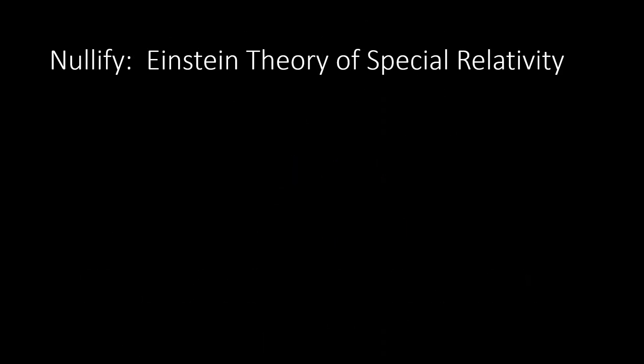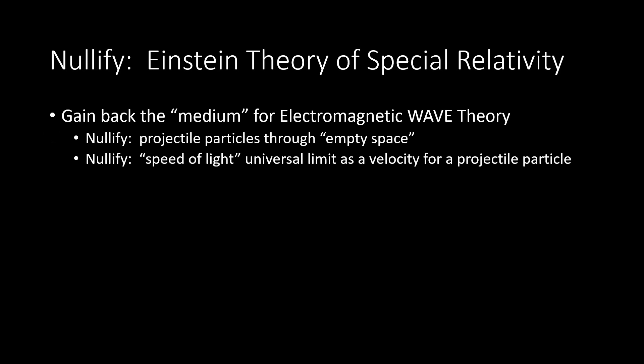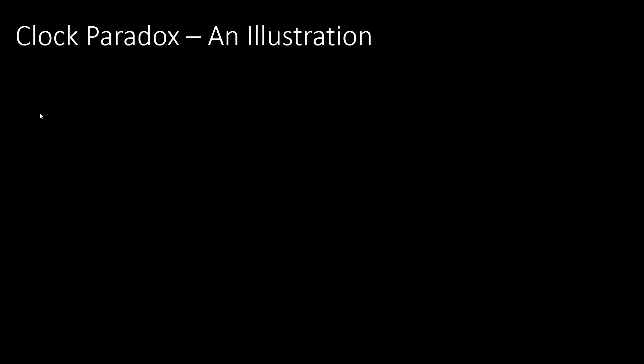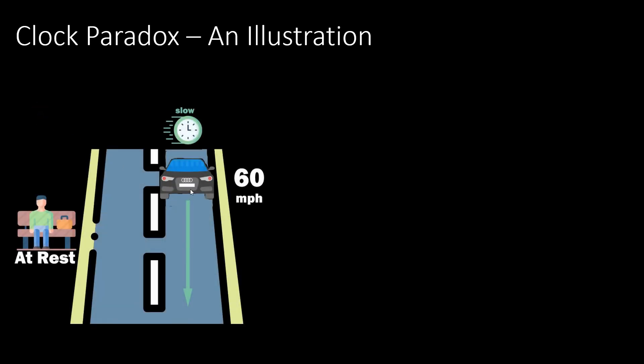First you need to understand how Einstein's theory of special relativity is wrong, because that allows you to gain back the medium for the electromagnetic wave theory. In his paper he writes that the introduction of a light ether or light medium will not be necessary. Einstein's relativity tells us that when you are moving, your time moves slower relative to someone else that is at rest.